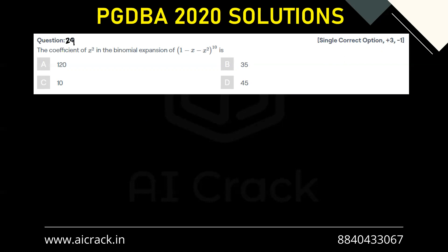Hi everyone, let's solve question number 29. The coefficient of x square in the binomial expansion of 1 minus x minus x square raised to the power 10.